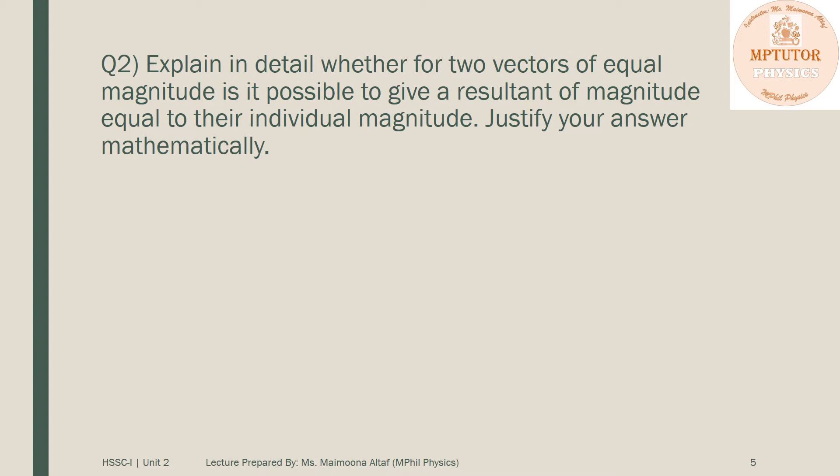In this question, we have to prove that if we have two vectors of equal magnitude and we add them, is it possible that the magnitude of their resultant is also equal to the magnitude of the individual vectors? So yes, it is possible if the angle between these vectors of equal magnitude is 120 degrees. You can prove this mathematically by solving example 2.3 which is given on page number 36 of your book.